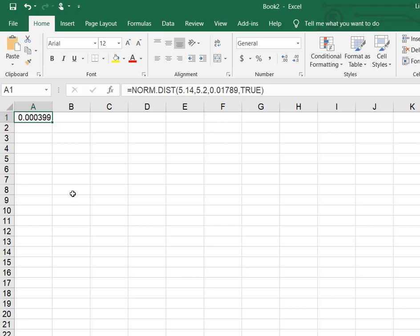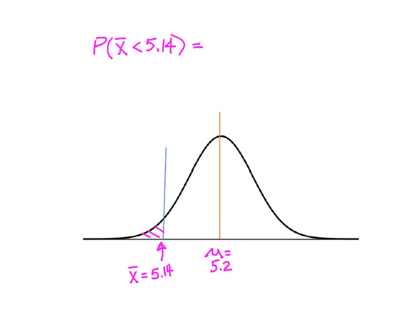Let's go back and look at our curve and see what this looks like. Here we are back at our curve, and we knew that what we were solving for was this small area here, or the probability that our sample would have a mean of less than 5.14 feet. When we looked in Excel, it told us it was 0.000399, which I would have rounded to 0.0004.